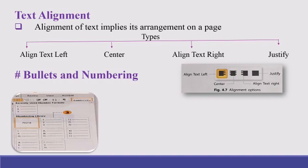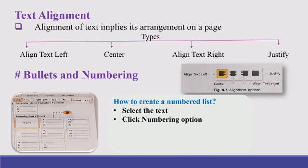You can use bullets and numbering while making a list of items. Bullets and numbering used at the beginning of each item makes it easy for reading. To create a numbered list, you have to select a text, click the numbering option present in Home tab, choose particular style from the numbering library for the list of items.